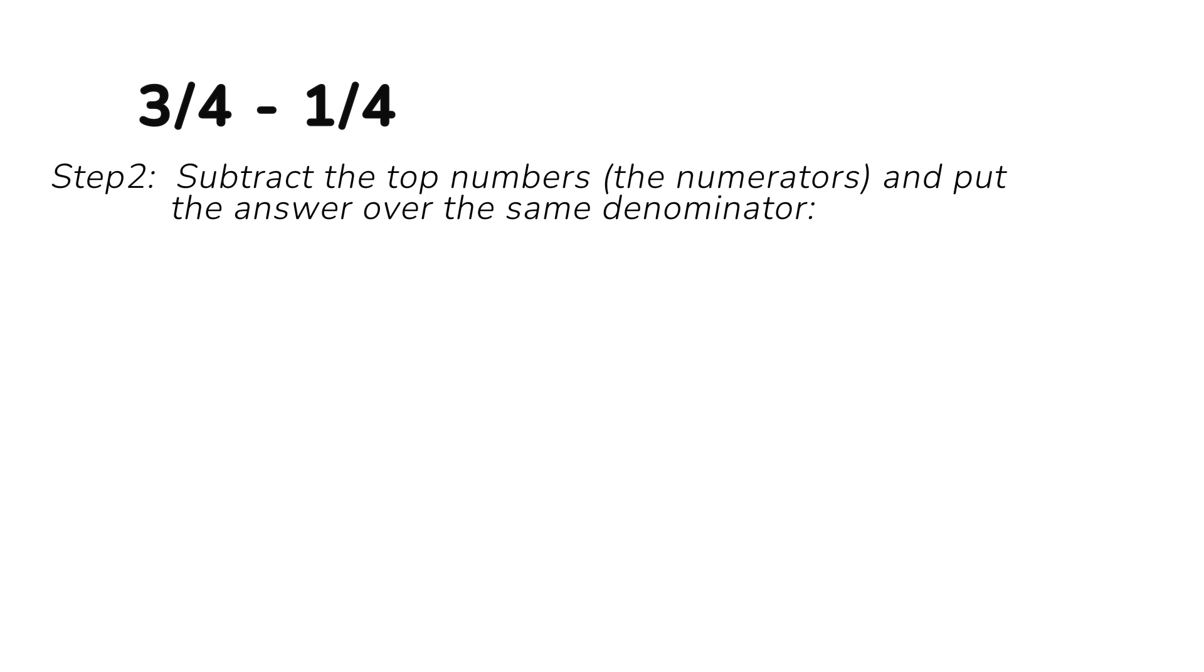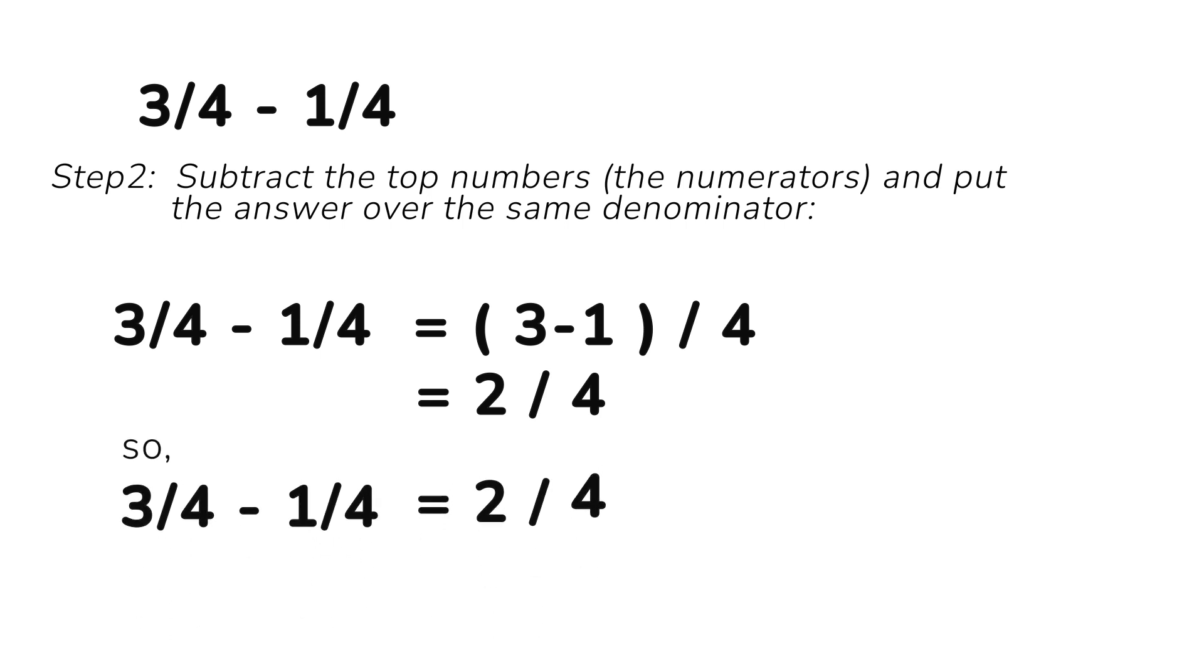Three over four minus one over four equals three minus one over four, which equals two over four. So three over four minus one over four equals two over four. Wasn't that interesting?